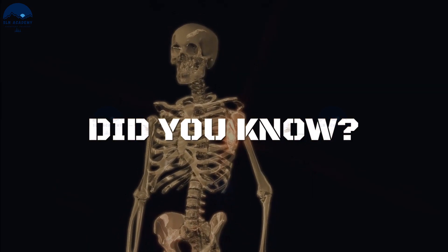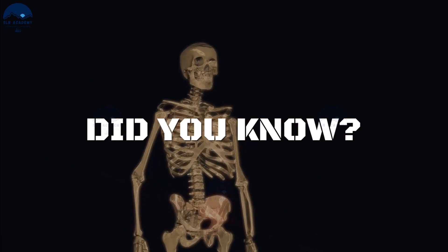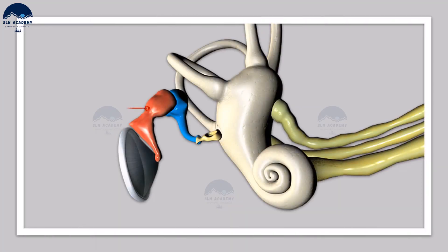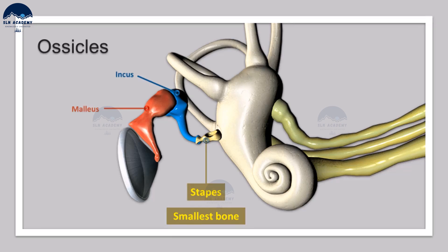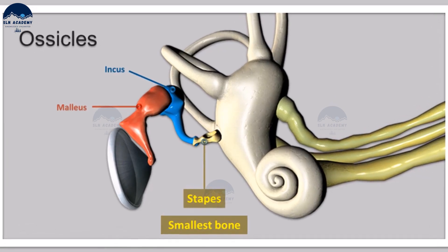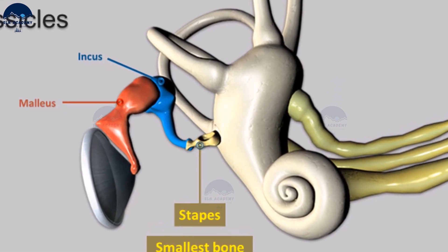Did you know what is the smallest bone in the human body? Each middle ear contains three tiny bones: the malleus, incus, and stapes. They are collectively called ear ossicles. The stapes, present in the middle ear, is the smallest and lightest bone of the human skeleton. This bone is also called the stirrup because of its shape.